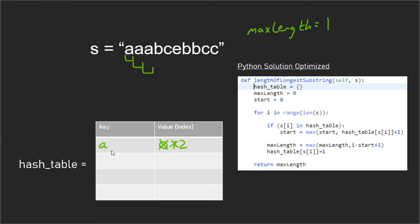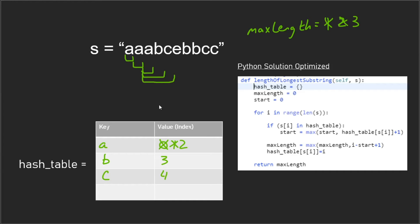We see that 'b' is not currently in the hash table, so we calculate a new max length — it becomes two. We add 'b' to the hash table at index three. That's the new sliding window. Then we encounter 'c', which is also not in the hash table, so max length becomes three and we add 'c' to the hash table at index four.